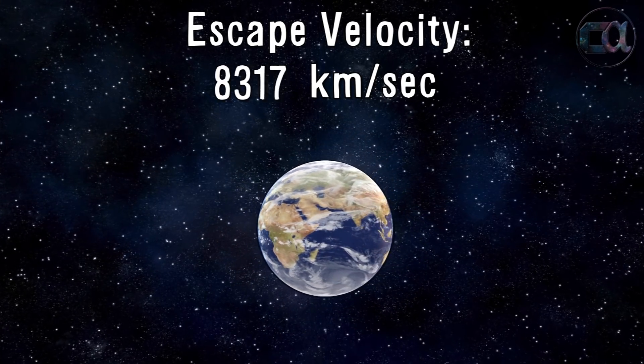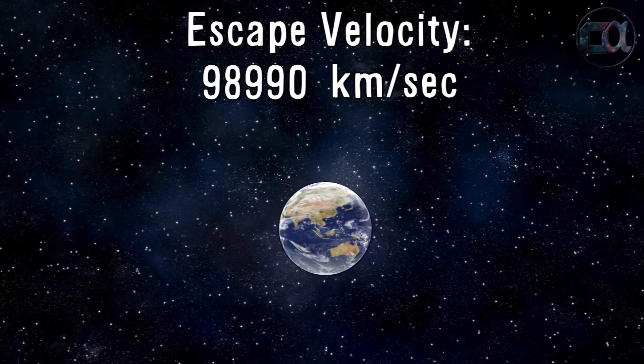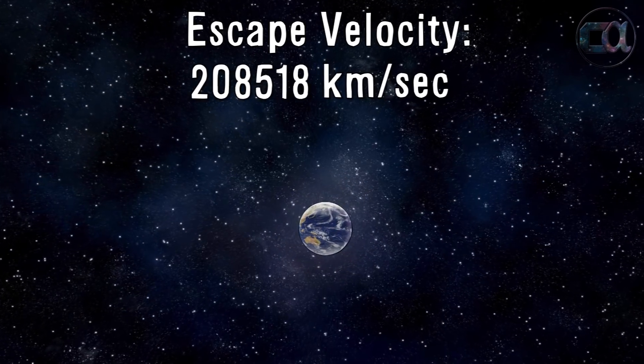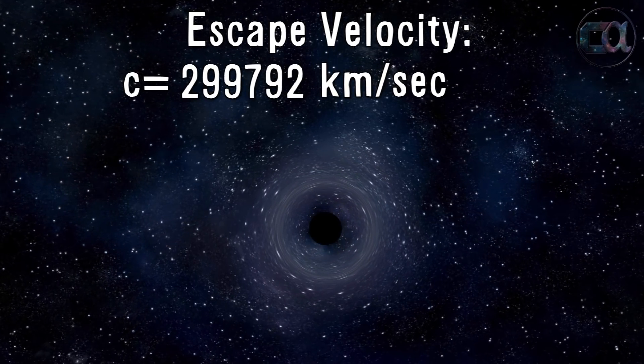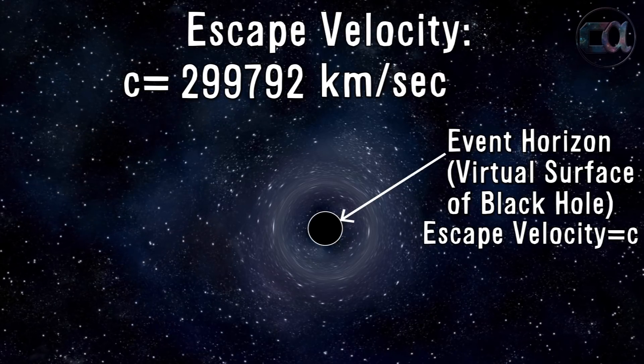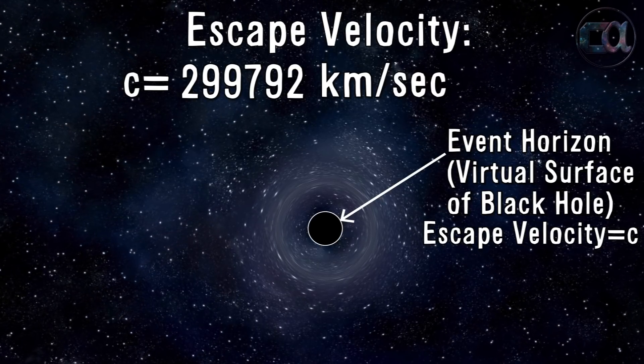The gravity at the surface is so high at black hole that the escape velocity is equal to the speed of light. The region where escape velocity becomes faster than the speed of light is called event horizon.